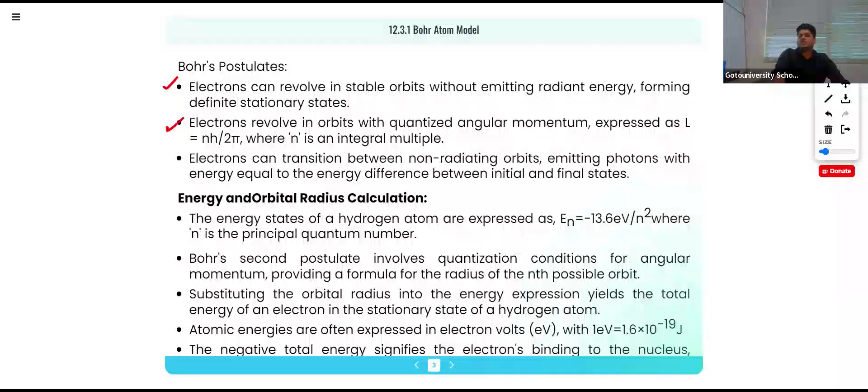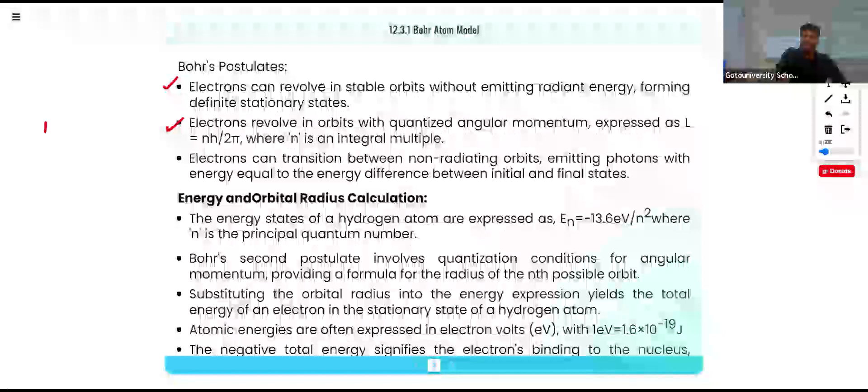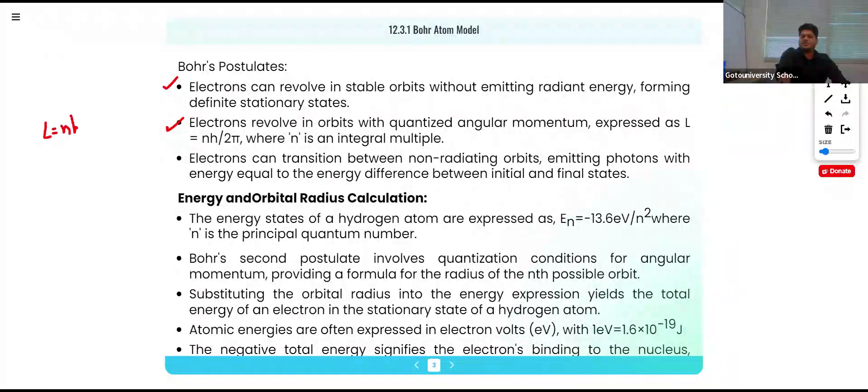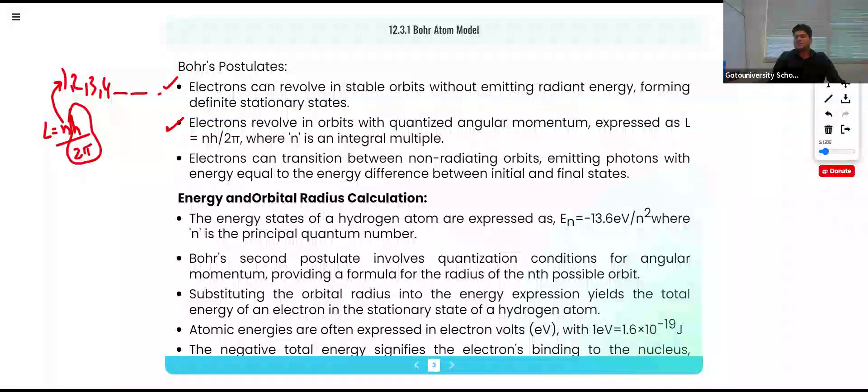Second postulate: electrons revolve in orbits with angular momentum n h upon 2π, an integral multiple of h upon 2π, where n equals 1, 2, 3, etc. Third: electrons can transition between non-radiating orbits, emitting photons with energy equal to the energy difference between initial and final states.